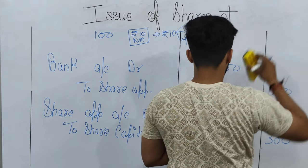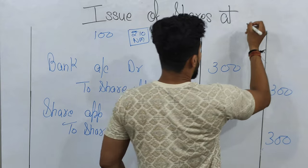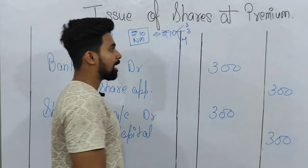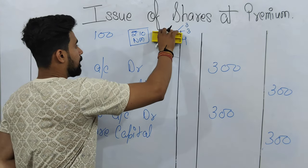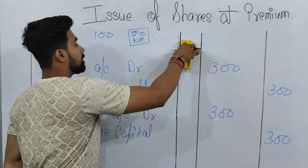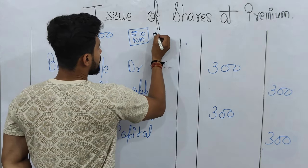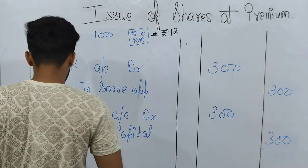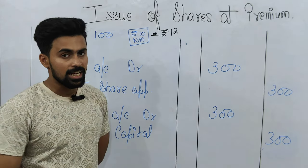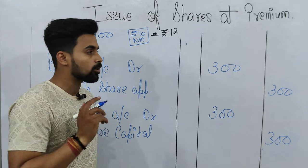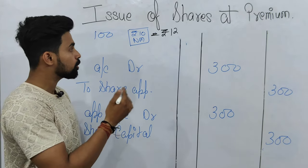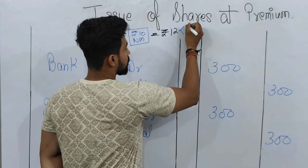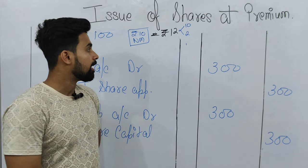Issue of shares at premium — what happens here? When a company issues a Rs. 10 share at Rs. 12, for example, the Rs. 12 comes as: the company charges Rs. 10 for the share and Rs. 2 as securities premium. That means when a company issues shares more than the nominal value of a share, it is called issue of shares at premium. So the price division will be 10 plus 2 — 10 for the share and 2 for the premium.